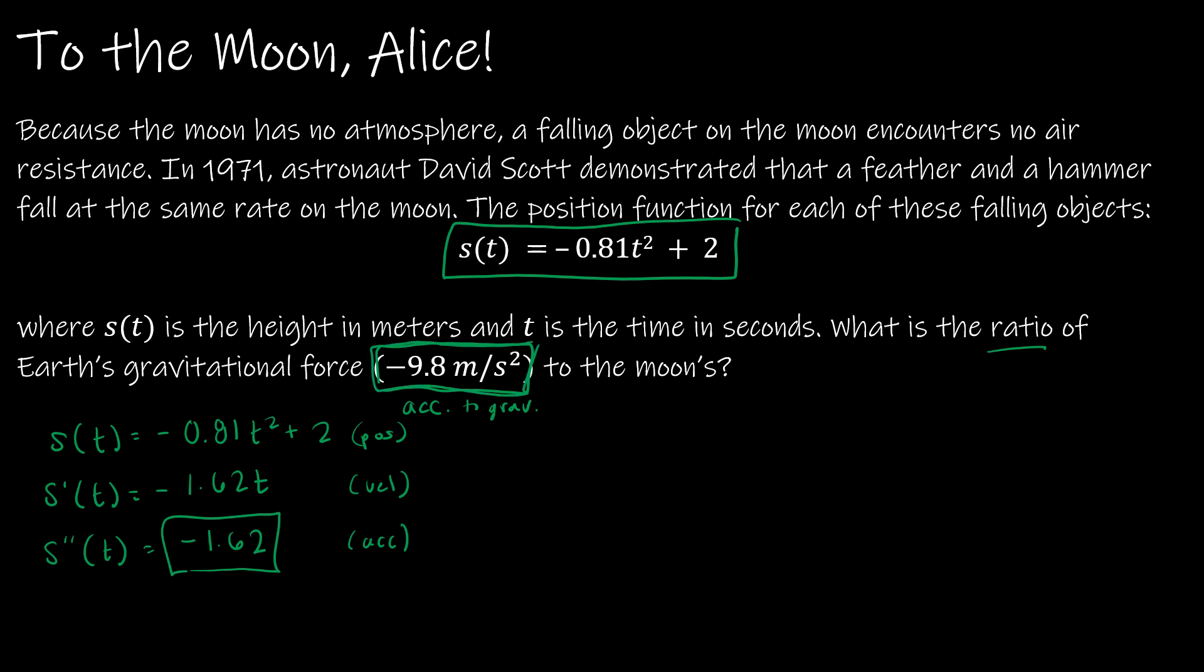So this is the value that I'm going to use compared to the negative 9.8. Now, the question says, what's the ratio, so ratio means fraction, of the Earth's gravitational force, negative 9.8 meters per second squared, to the moon's, which is negative 1.62 meters per second squared. So essentially, they're just asking me to divide that. So I get 6.05, or the ratio of the Earth is about six times that of the moon. So the gravitational force on the Earth is about six times the gravitational force of the moon.